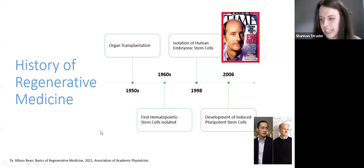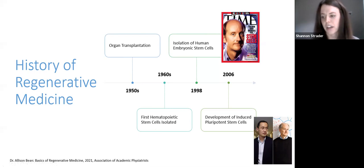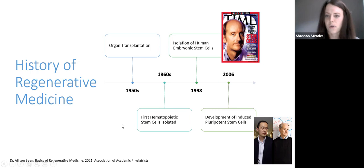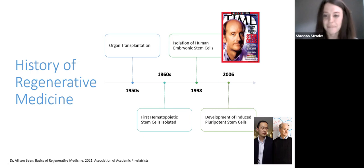Then in 1998, my mentor in undergrad brought stem cells to the world. He isolated the first human embryonic stem cell for the first time. Later, in 2006, both he and Dr. Yamanaka — who received the Nobel Prize — developed induced pluripotent stem cells from adult stem cells, showing that mature cells can be reprogrammed back into an embryonic state. I went specifically to UW Medicine for undergrad to work in his lab.